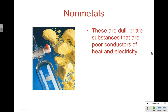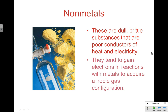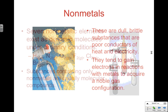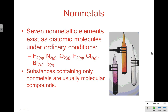Nonmetals are the exact opposite of metals — they're dull, brittle, and poor conductors of heat and electricity. They tend to gain electrons in redox reactions to acquire a noble gas configuration. There are seven nonmetallic elements that exist as diatomic substances, which you should know from pre-AP chemistry. Substances containing only nonmetals are usually molecular compounds, with one exception: ammonium compounds (NH₄⁺). One of the most important classes of molecular compounds is the hydrocarbon — the combination of carbon and hydrogen.